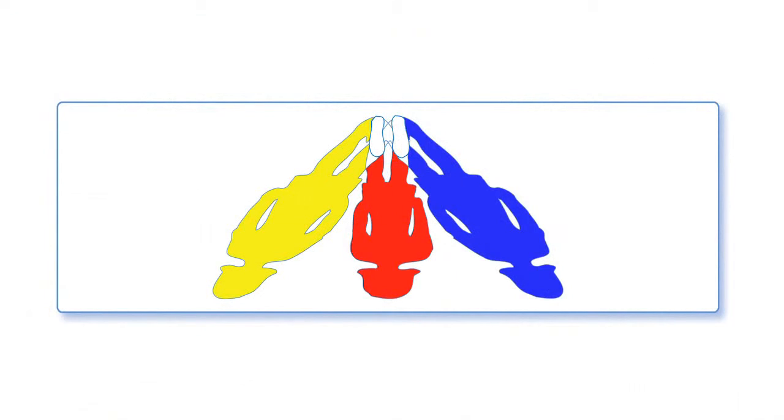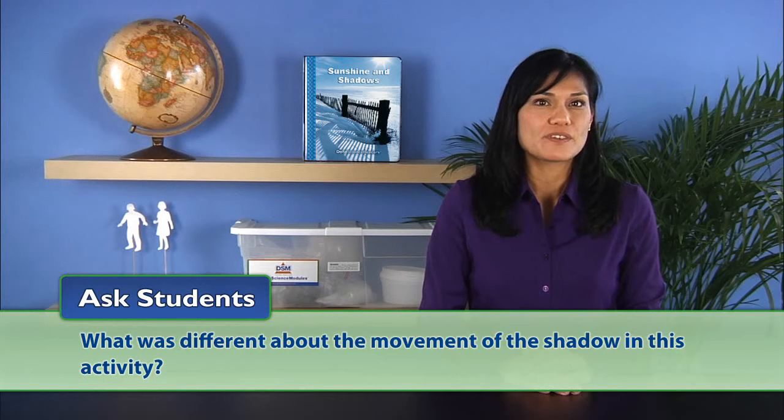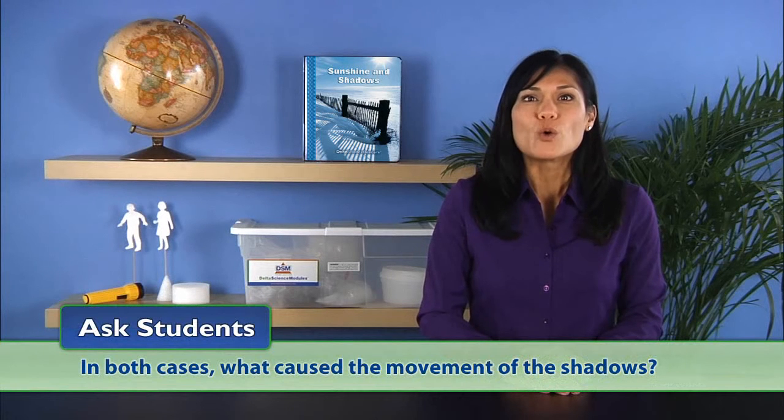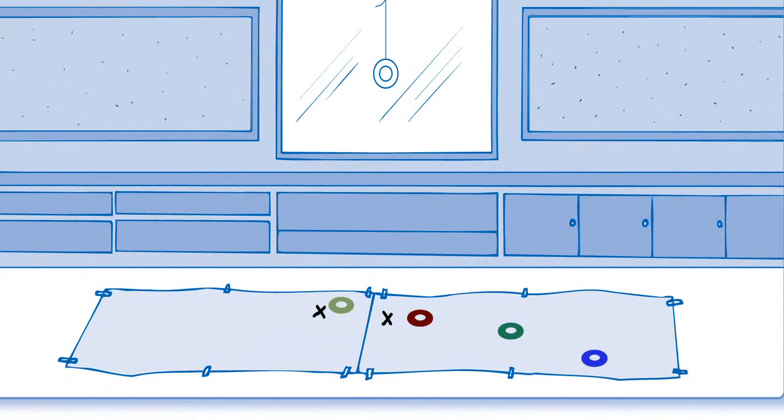Help the students recall how they noted that shadows changed places in activity four. Ask students, what was the difference about the movement of the shadow in this activity? Students should note that in this case, the shadow was not connected to the ground and the whole shadow moved to a new place. Then ask, in both cases, what caused the movement of the shadows? Students should have discovered that in both cases, the movement of the sun caused the movement of the shadow. As the sun's place in the sky changed, the shadow's place on the ground or floor changed.